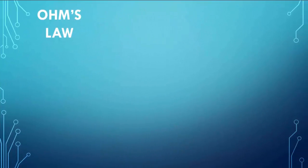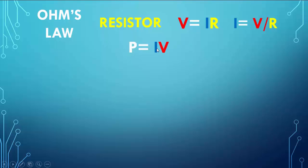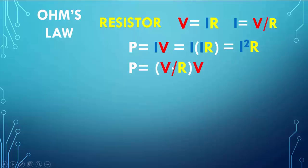Now let's get back to Ohm's law for a resistor. Here's the relationship where the voltage is directly proportional to the current through the proportionality constant called the resistor: V = IR. You can also solve for I by dividing R from both sides. Now we know power is equal to current times voltage: P = IV. We can substitute V = IR to get P = I²R. You can also substitute I = V/R to get P = V²/R. Notice the square relationships in both cases — one for the current and one for the voltage.